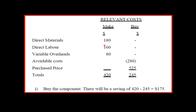The relevant costs of the decision to make would be the variable costs of $1.80, $1.60, and $0.80. The $1.25 appears in both columns and is excluded as it has no impact on the decision. The $2.80 is treated as an avoidable cost. The relevant cost of making is $4.20, whereas the relevant cost of buying is $5.25 less the cost saving of $2.80, giving $2.45. Therefore, you should buy the component — there will be a cost saving of $4.20 minus $2.45, equaling $1.75 per unit.